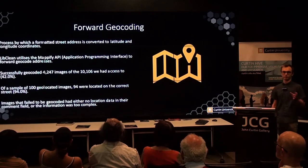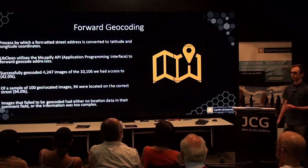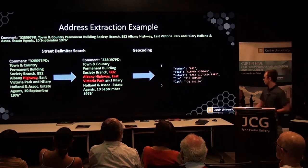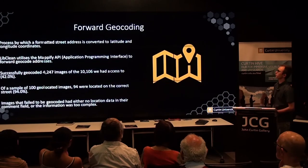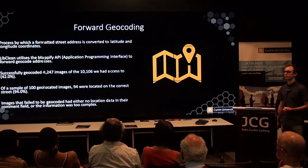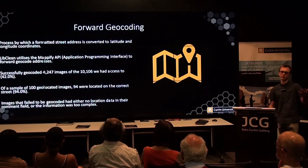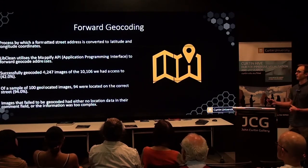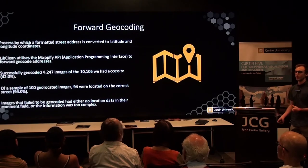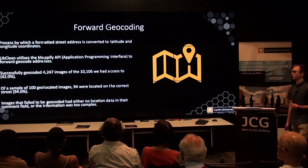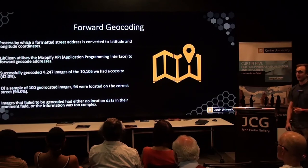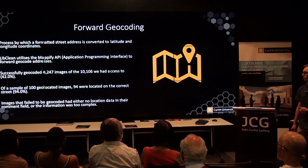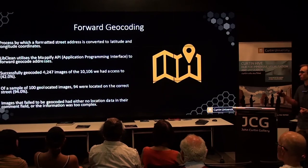Geocoding is the process by which we take a structured street address and convert it to latitude-longitude coordinates. LibClean utilizes the Mapify API — short for Application Programming Interface — which allows a program to effectively Google search an address, and Mapify returns a longitude-latitude if that address is valid. Of the 10,106 images we had access to, we were able to successfully geocode 4,247 of them, giving a geocode accuracy of about 42%.